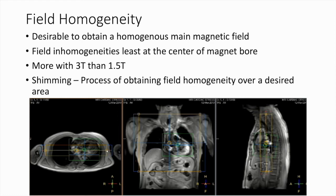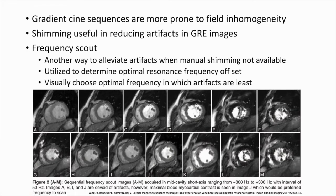Though the magnetic field vectors are parallel within the MR gantry, they are not homogeneous throughout. Field inhomogeneities are least at the center of the magnetic bore and are more pronounced at 3 Tesla than at 1.5 Tesla. Since the heart is eccentrically placed within the thorax, it is very difficult to position the patient such that the heart is at the center of the bore. Shimming is a process of obtaining field homogeneity over a desired area, and some vendors provide manual shimming options where you can place a shim box over the desired area. Gradient cine sequences are more prone to field inhomogeneities, and shimming is useful in reducing these artifacts in gradient echo images.